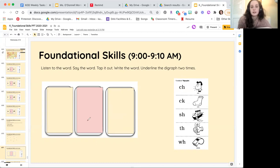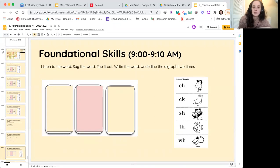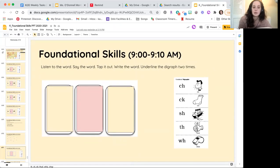Alright, so now the next step is we're going to write some words. I'm going to tell you a word, you're going to say it after me, tap it out, and then write down the sounds that you hear. You can definitely look at this digraph chart to help you figure out what sound to write. Alright, here we go.